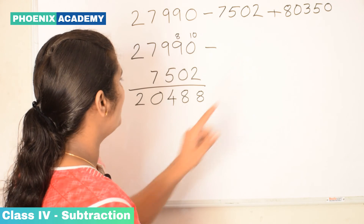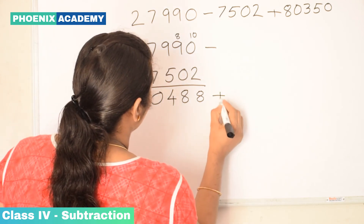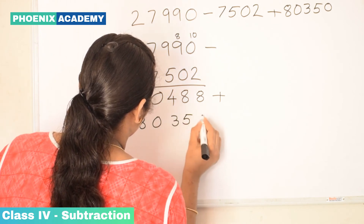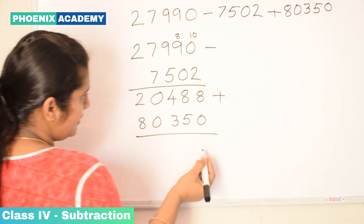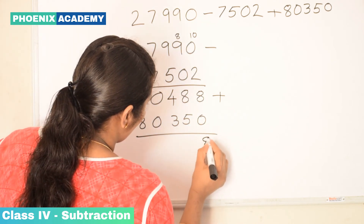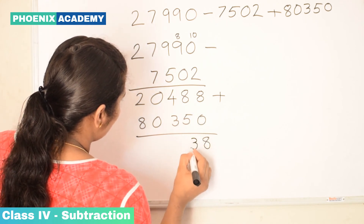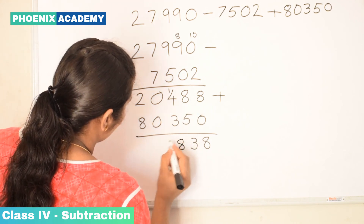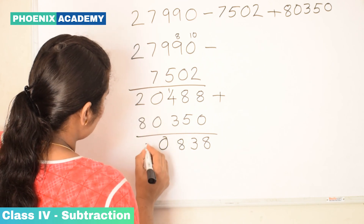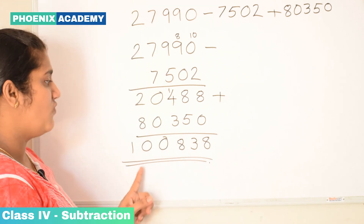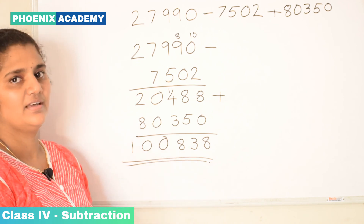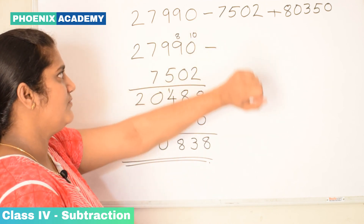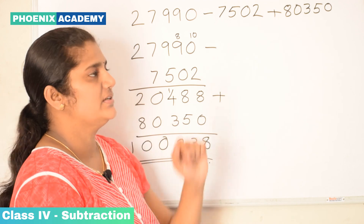Now we add this result to 80,350. 8 plus 0 is 8. 8 plus 5 is 13 — write 3, carry 1. 4 plus 3 is 7, plus 1 carry is 8. 0 plus 0 is 0. 2 plus 8 is 10. So the answer is 1,08,838. That is the answer to 27,990 minus 7,502 plus 80,350.